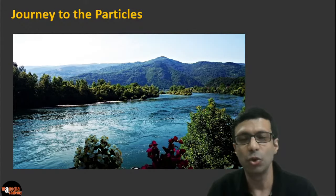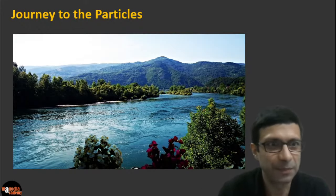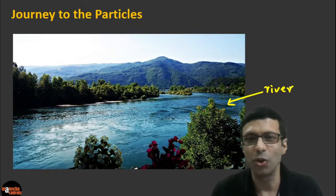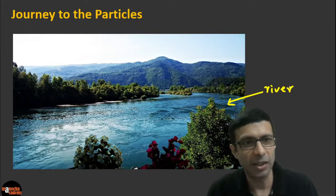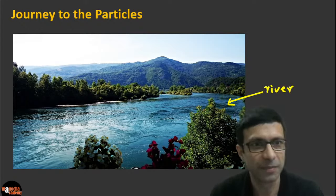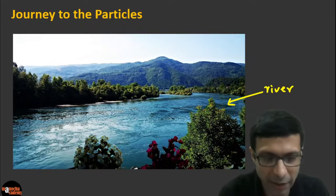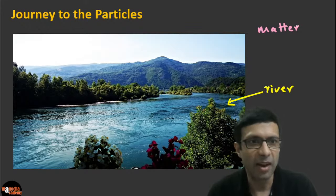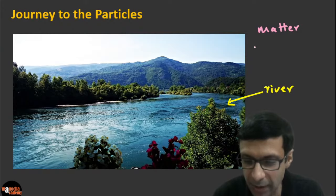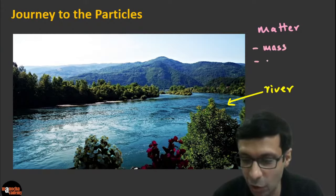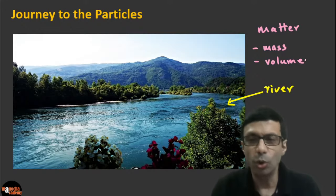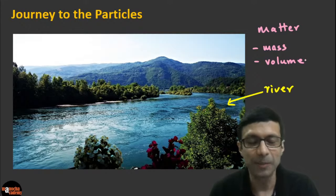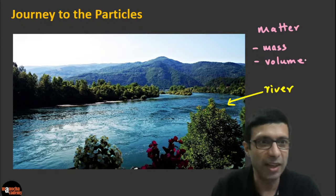Let's start our journey into the particles. If you take a look at the picture here, we can see a river. All of you have seen rivers, lakes, and oceans. Is a river matter? Definitely it's matter. In fact, all the things we see around us — whether you look at the river, the trees, the mountains, the air — they are all matter. What is matter? They basically have mass and they occupy space, or we can say they have volume. The entire world around us is made of matter — your phone, tablet, the air in your room, the walls — these are all matter.